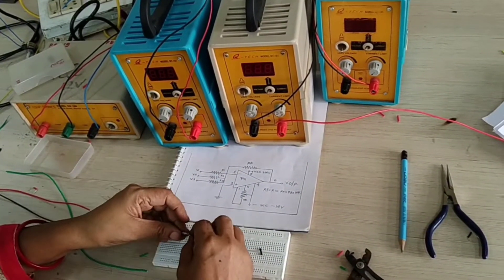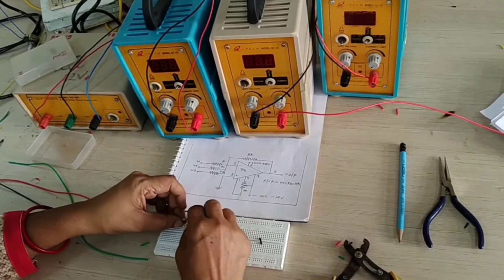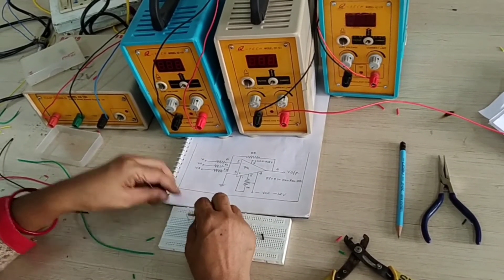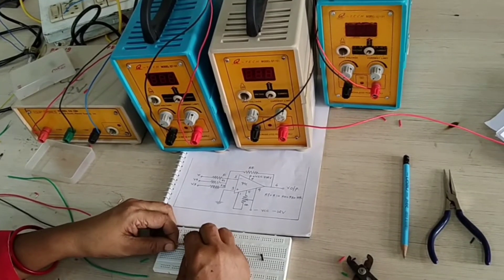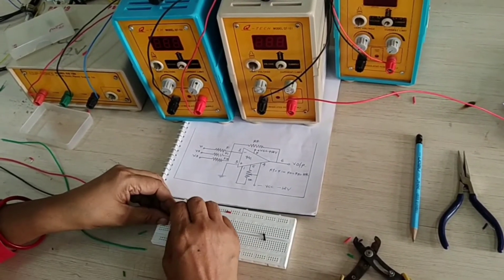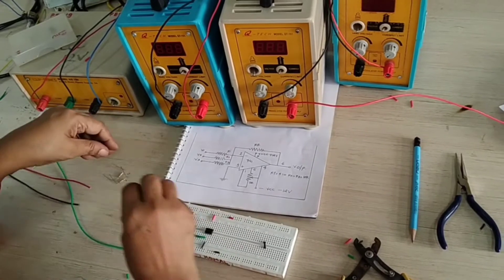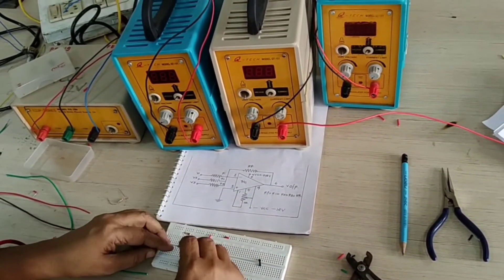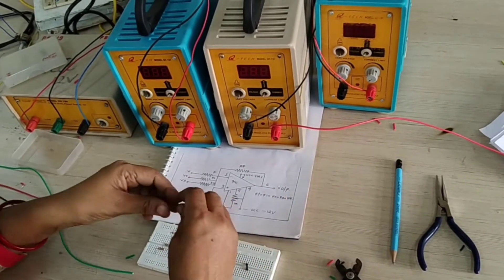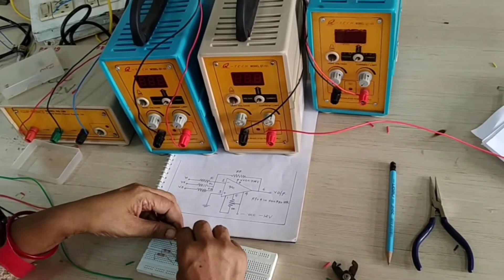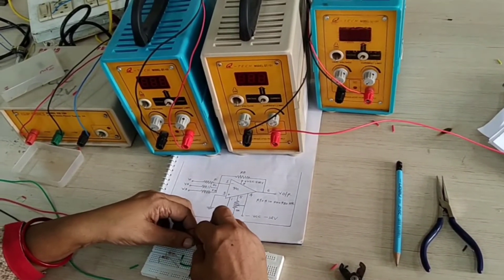Okay. Here. Now see here, first, this is your R1. Next is your R2. R2 and last R3. And this is your feedback resistor, pin number 2 to pin number 6.